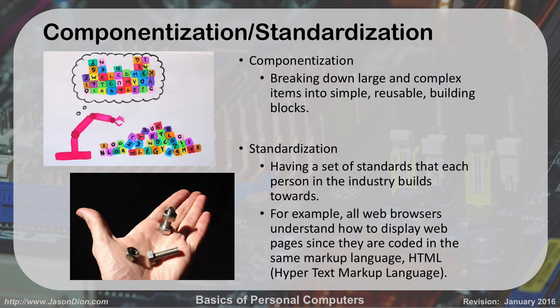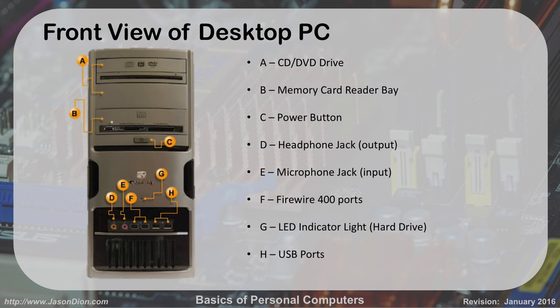We use standardization all the time in computers — we have standards for everything. We have standards for web browsers and how they display things like HTML. These pictures here are JPEG images — that's a standard format for imaging. Here is a front view of a desktop computer that probably looks similar to what you have at home. It's more of a business-style machine, but same idea — this is an old Gateway computer.